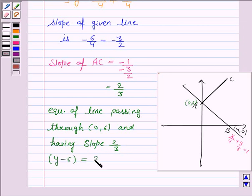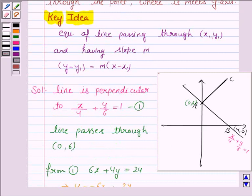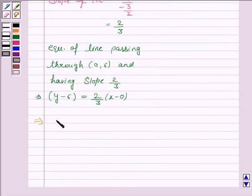Using the key idea, this implies 3(y - 6) = 2x, which simplifies to 2x - 3y + 18 = 0.